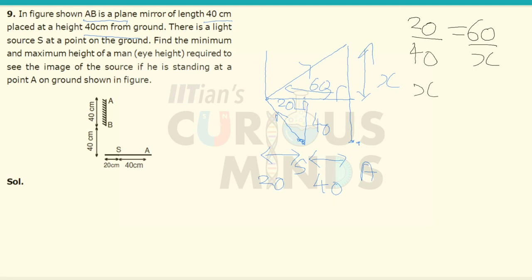So X will be equal to 120. This distance from the mirror to the ground is given as 40. So the height required from the ground will be equal to 40 plus 120, which will be equal to 160 centimeters. The minimum height required is equal to 160 centimeters.